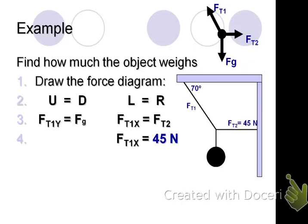What am I trying to find in this problem? Trying to find how much the object weighs. What's another name for weight? Not mass, but force of gravity. I'm looking for Fg. That's how much it weighs. So I see in the problem that Fg is equal to FT1y, and I just now figured out that I know FT1x. Does that suggest a way to solve this problem?